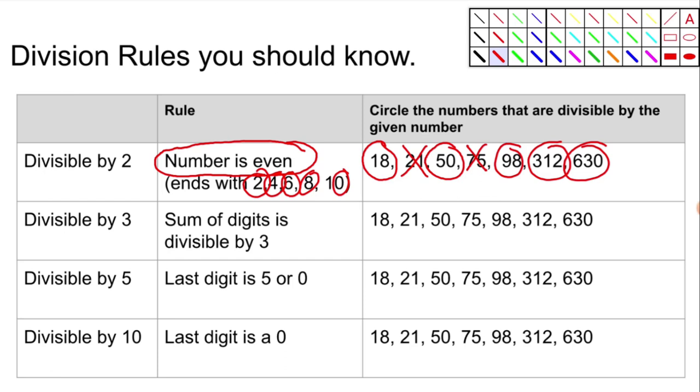What about divisible by 3? This one's really interesting. So the sum of the digits, meaning we need to add the digits up and see if that's divisible by 3. So let's do the first one. 18 is really 1 plus 8. Let's add those up and what do we get? We get 9. So is 9 divisible by 3? Yes, that means 18 is going to be divisible by 3. Same thing with 21. Add the 2 and the 1 together. That's 3. Is 3 divisible by 3? Yes, it is. So then I know that 21 is divisible by 3.